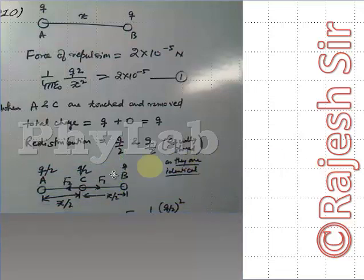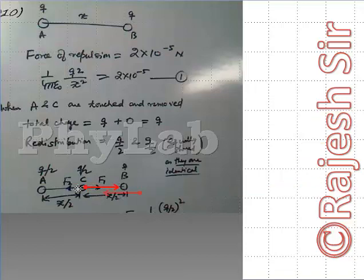Now metallic sphere C is placed at the midpoint between A and B. Sphere A is going to repel metallic sphere C as they are like charges, and metallic sphere B is also going to repel C because they are also like charges. Here the charge is positive and here also the charge is positive, though the magnitudes differ.